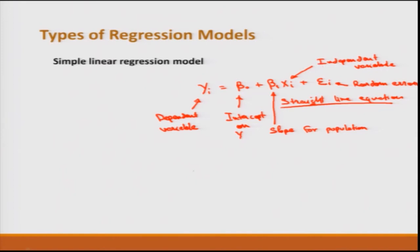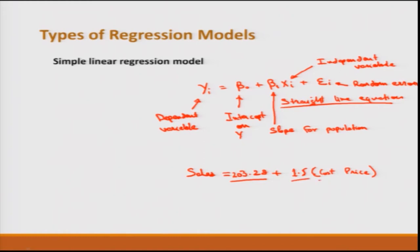An example: if y_i is sales, then sales = 203.28 + 1.5 × cost price. Here, cost price is the independent variable and we are trying to predict sales. The intercept 203.28 means this minimum amount of sales would occur, and with one unit change in cost price, sales increase by 1.5 times. This is a regression model.